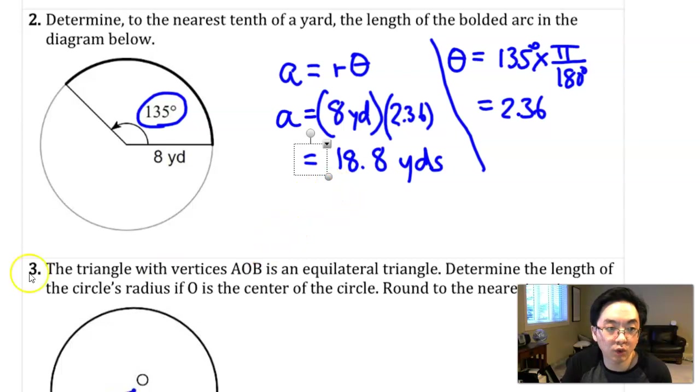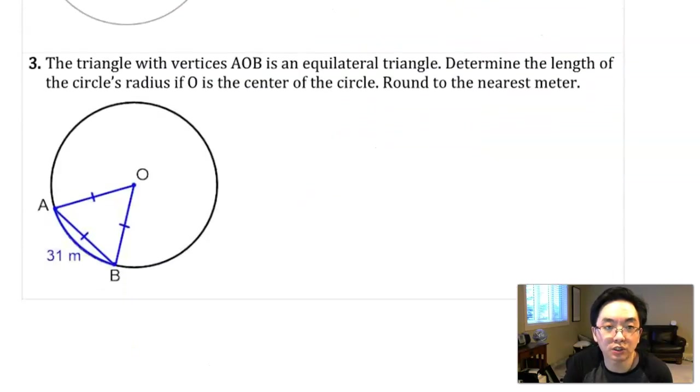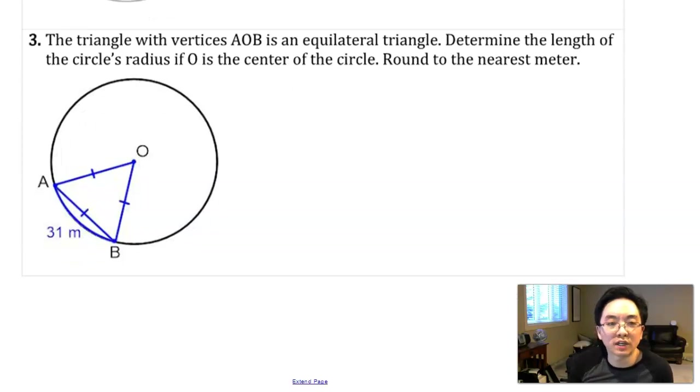We have one example left, so let's go on to number three. The interesting thing about number three is that there's only one number that's given, and that appears to be the arc length from A to B equals 31 meters. The arc length formula has only three quantities: theta, radius, and arc length. The problem is they only give us one quantity, so we have to draw on our previous knowledge of triangles to solve this question.